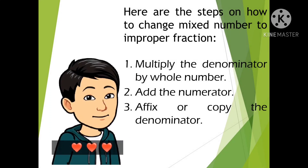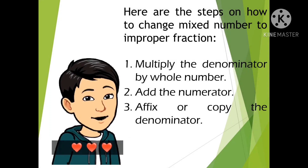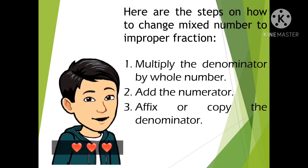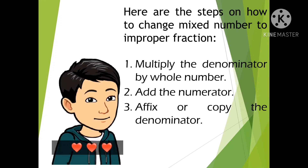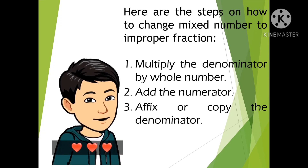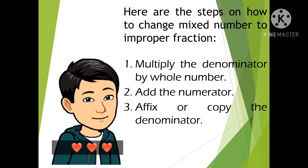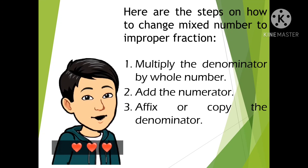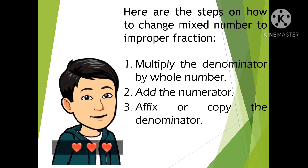Here are the steps on how to change a mixed number to an improper fraction. Step 1: Multiply the denominator by the whole number. Step 2: Add the numerator. Step 3: Affix or copy the denominator.